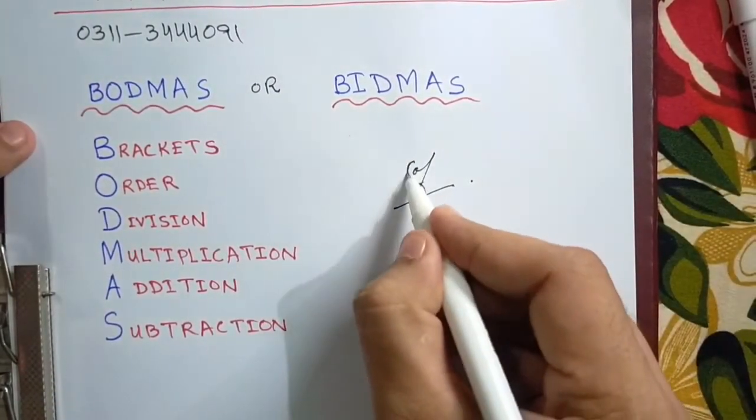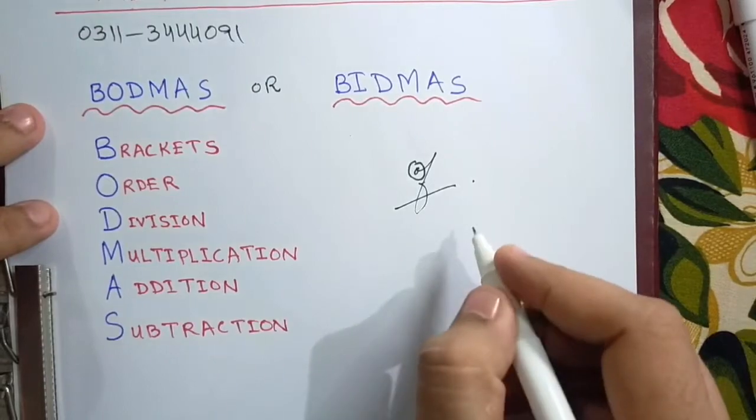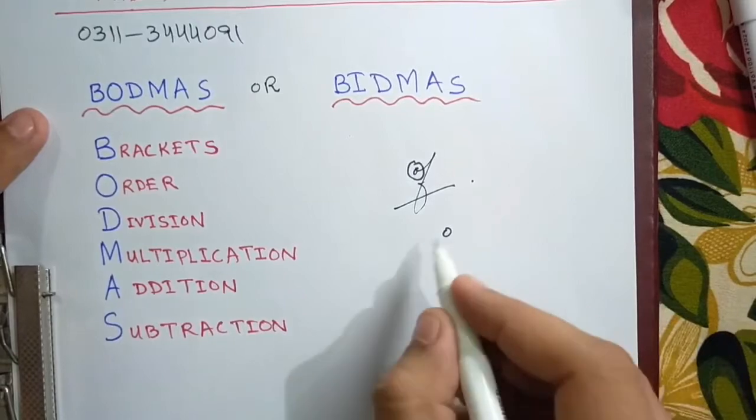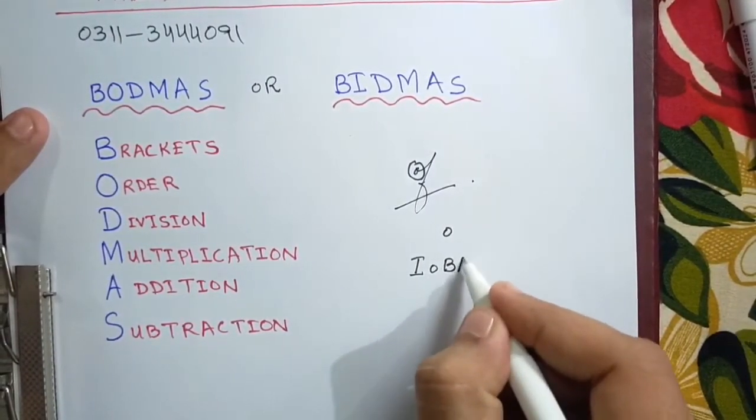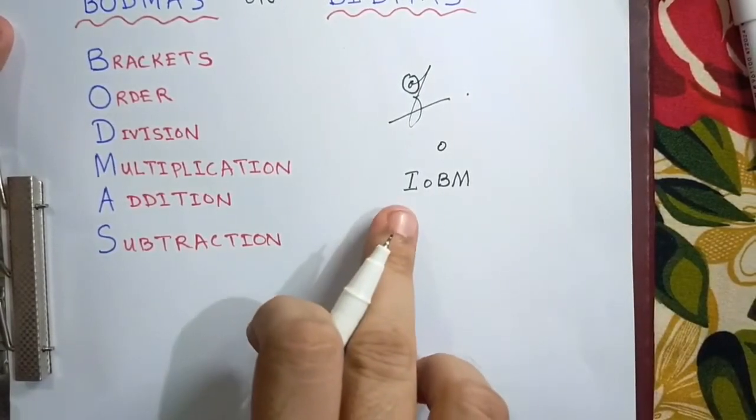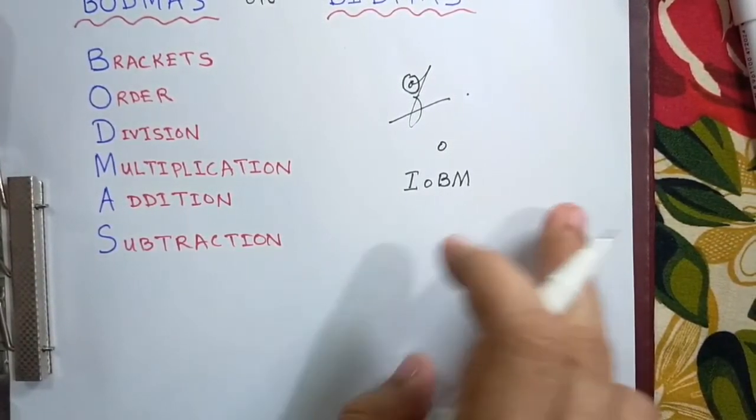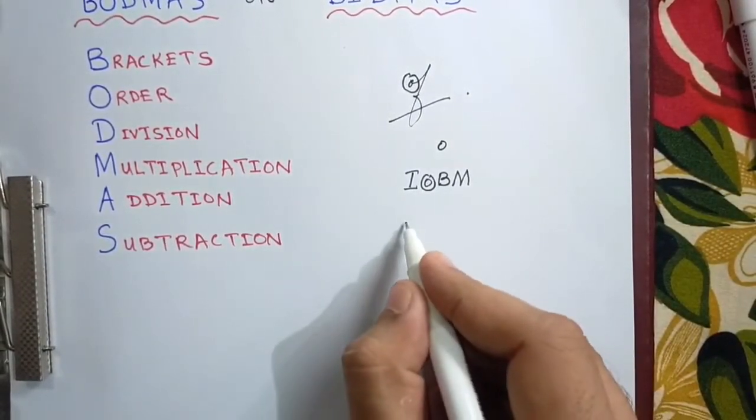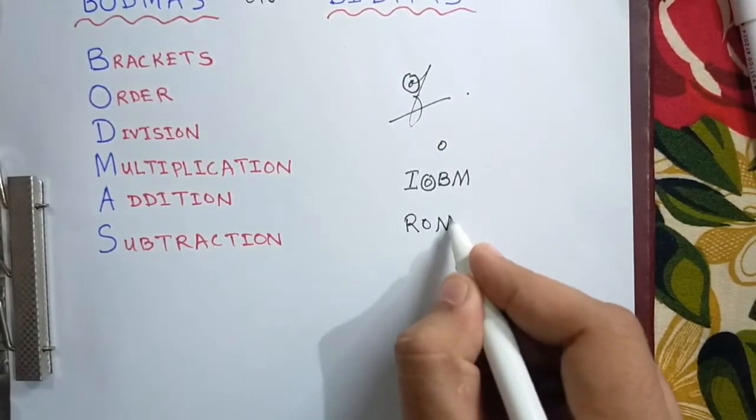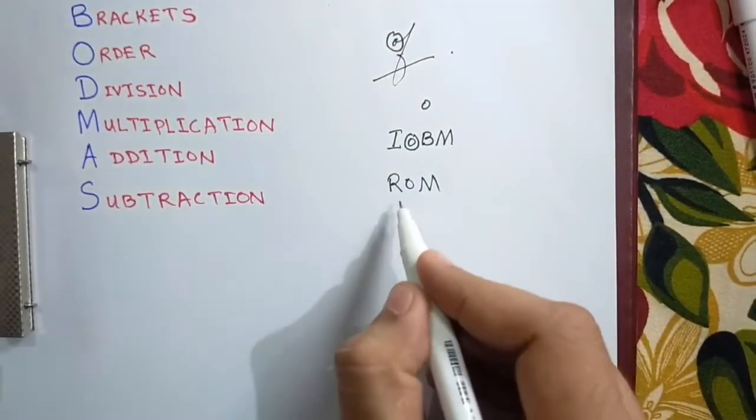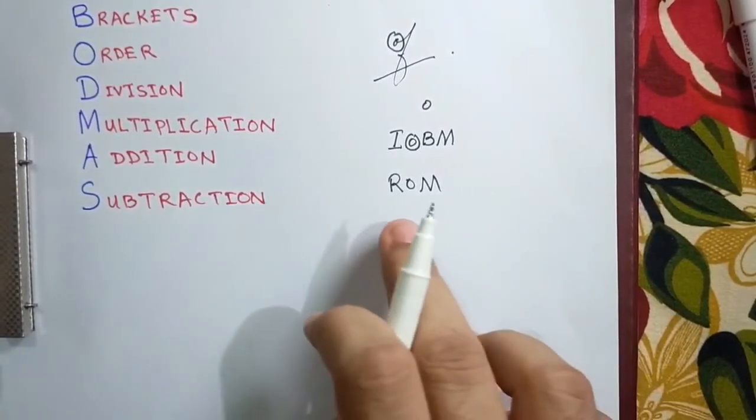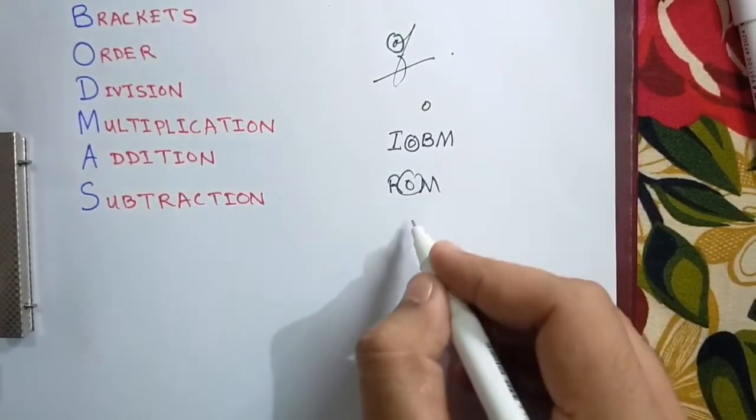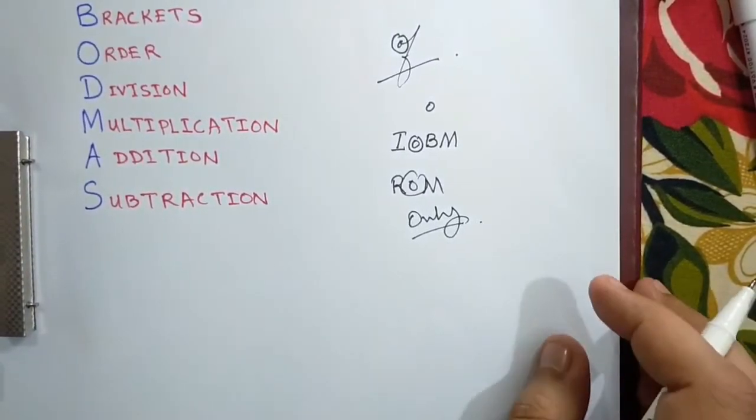Generally we do not use O of any of in an acronym. If we use, we use small or not a capital one, like I O B M, this is an institute in Karachi, Institute of Business Management. We take small O. If we use capital O, like ROM, this is an example, read only memory. Each letter symbolizes or stands for a particular word.